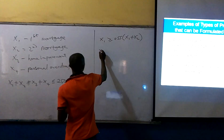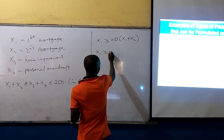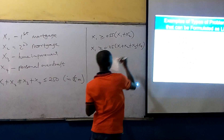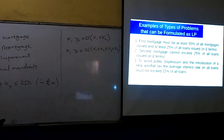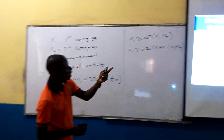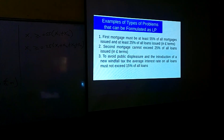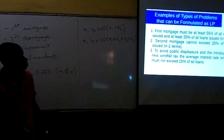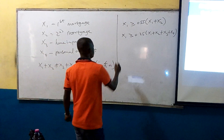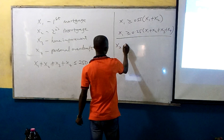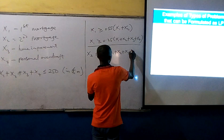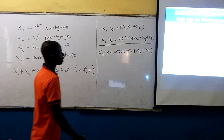The first mortgage must also be at least 25% of all loans issued, so X1 ≥ 0.25(X1 + X2 + X3 + X4). Additionally, the second mortgage cannot exceed 25% of all loans issued — it should be less than or equal to — so X2 ≤ 0.25(X1 + X2 + X3 + X4).